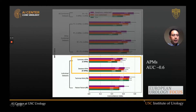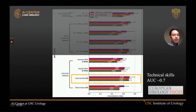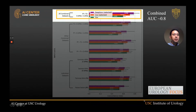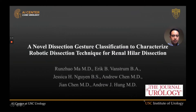Using this data with a deep learning model to predict time to urinary continence recovery: automated performance metrics alone yield an AUC of approximately 0.6; adding technical skills improves performance to 0.7; combining all available data — patient factors, technical skills, and automated performance metrics — yields an AUC of 0.8.